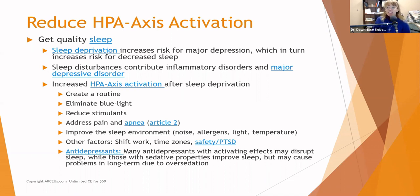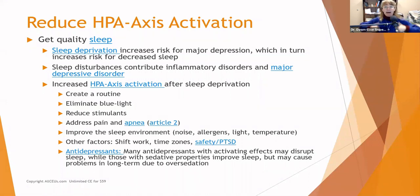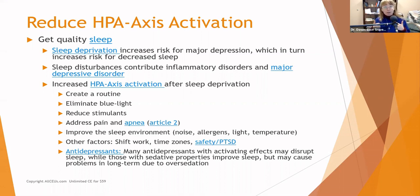Sleep disturbances contribute to inflammation and major depression. Increased HPA axis activation creates sleep deprivation. After someone is sleep-deprived, they wake up with cortisol levels out of whack — the HPA axis ramps up to give them energy, going into overdrive. Help people create a sleep routine. Educate them about the problems with blue light, especially within two hours of bedtime — including not only digital devices but overhead lights. If they have cool or daylight bulbs in their evening spaces, encourage them to switch to softer white or slightly yellow-tinted bulbs.